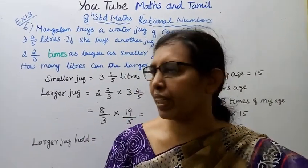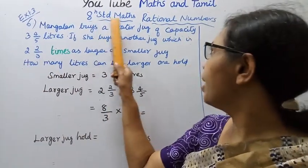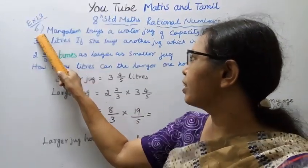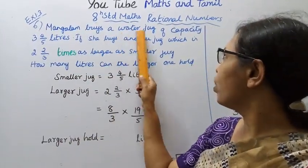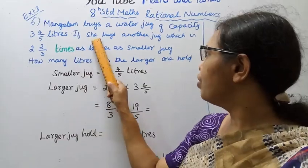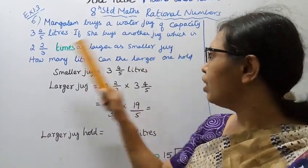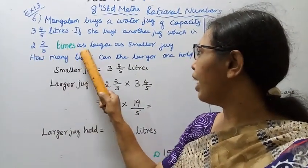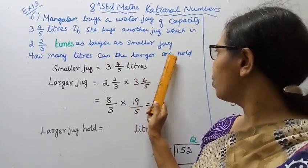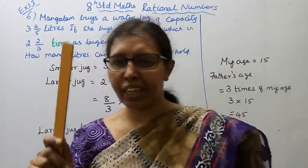Hello students, welcome to Maths and Tamil channel. 8th grade Maths, Term 1, Rational Numbers, Exercise 1.3. Murugelan buys a water jug of capacity 3 4/5 liters. If she buys another jug which is 2 2/3 times as large as the smaller jug, how many liters can the larger one hold?